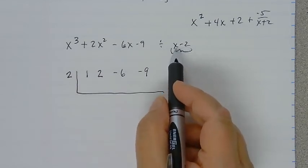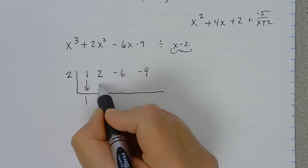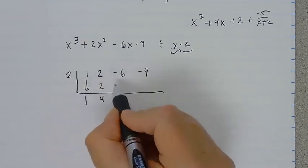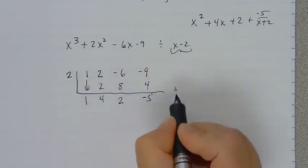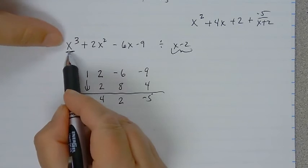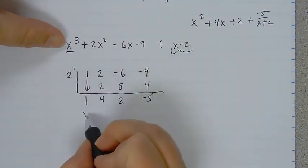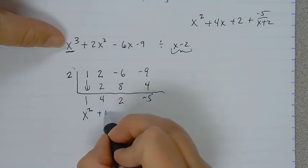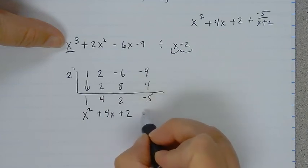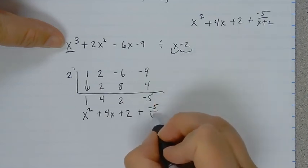So let's do synthetic substitution then, or synthetic division. Bring down the 1, multiply, add, multiply, add, multiply, add. Notice I started with an x cubed. I divided out an x term. So what I would be left with is x squared. So this would be 1x squared plus 4x plus 2 plus a remainder of negative 5 out of what I started with.